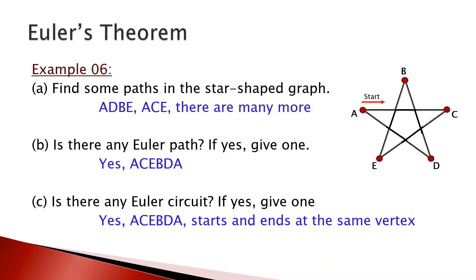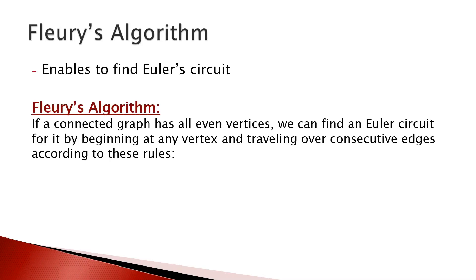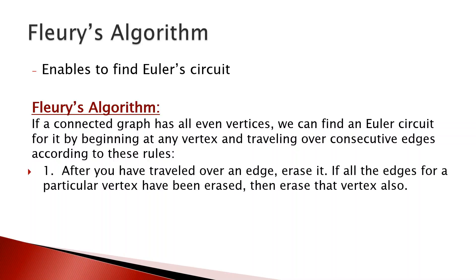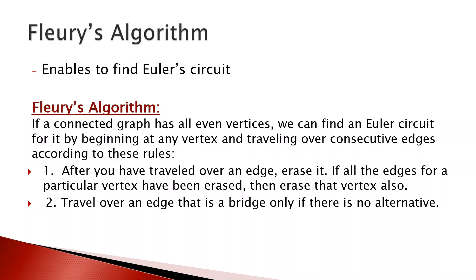Fleury's algorithm finds an Euler circuit in a connected graph with all even vertices. The rules are: begin at any vertex and travel over consecutive edges. After traveling over an edge, erase it; if all edges at a vertex have been erased, erase the vertex too. Most importantly, travel over a bridge only if there is no alternate route — crossing a bridge disconnects the graph, so avoid it when possible.